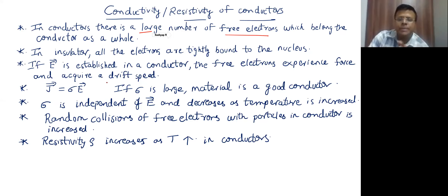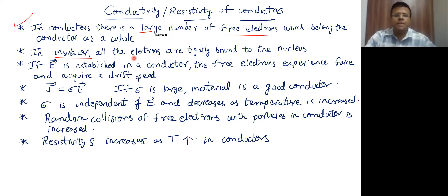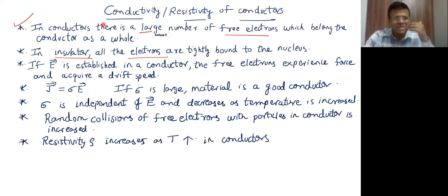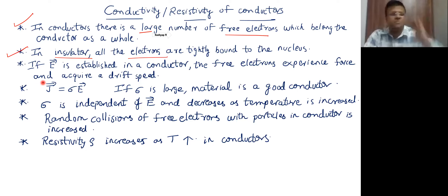These free electrons belong to the conductor as a whole, meaning they are free to move throughout the conductor anywhere they want. That is what we mean by conductors. If we talk about insulators, the electrons are tightly bound to the nucleus and they are not free to move. We will be seeing the reasons for this from the energy level perspective.